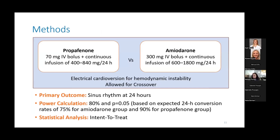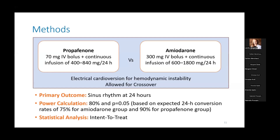They excluded patients with chronic persistent or permanent AFib, severe LV systolic dysfunction, history of second or third degree AV block, pacemaker dependence, recent MACE procedure, or those requiring high-dose vasopressor therapy — defined as norepinephrine at a dose greater than 1 mcg/kg/min. Patients would also receive electrical cardioversion if they became hemodynamically unstable, and crossover was allowed at the provider's discretion. The primary outcome was sinus rhythm at 24 hours. They calculated needing 100 patients per group for 80% power at a p-value of 0.05, based on retrospective data showing 75% conversion in amiodarone and 90% in propafenone, and conducted an intent-to-treat analysis.